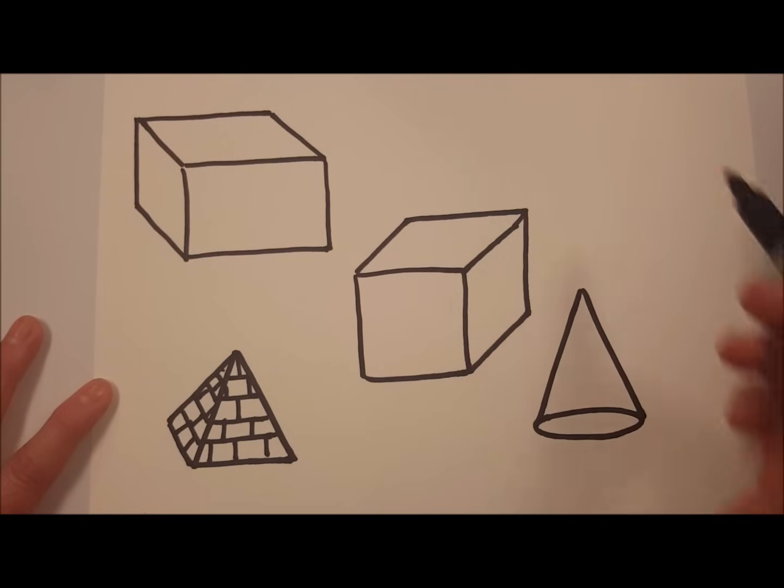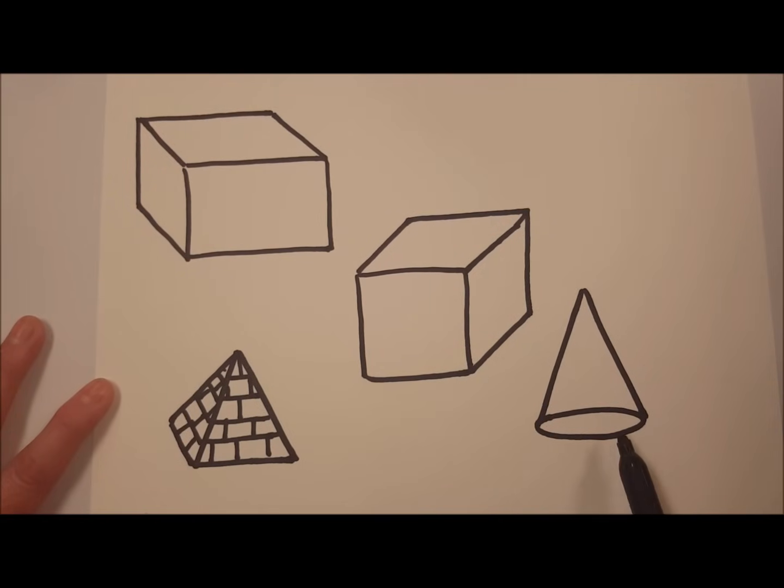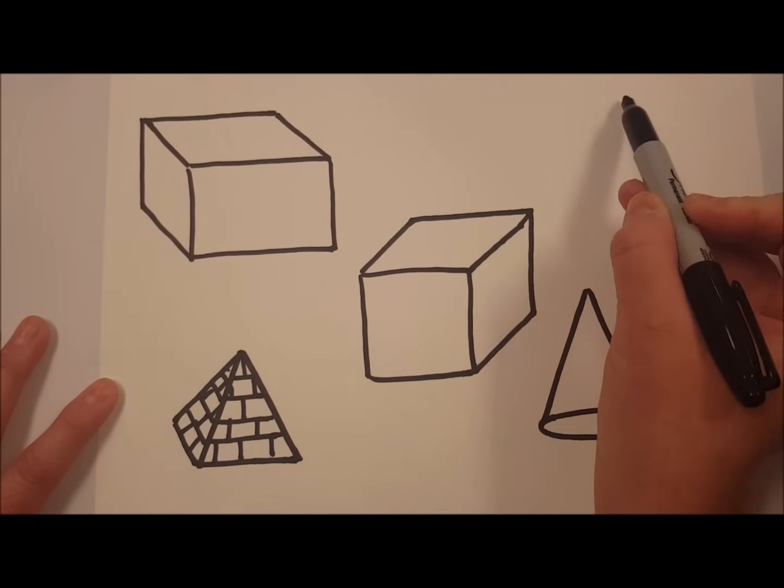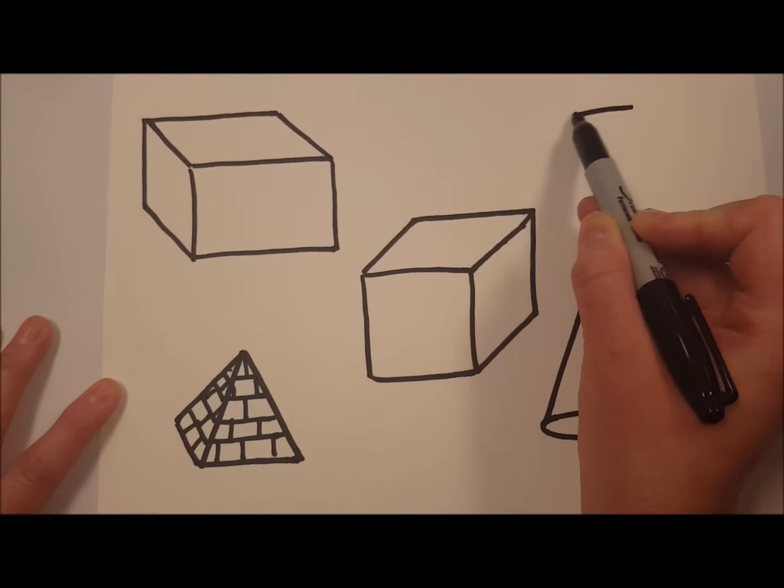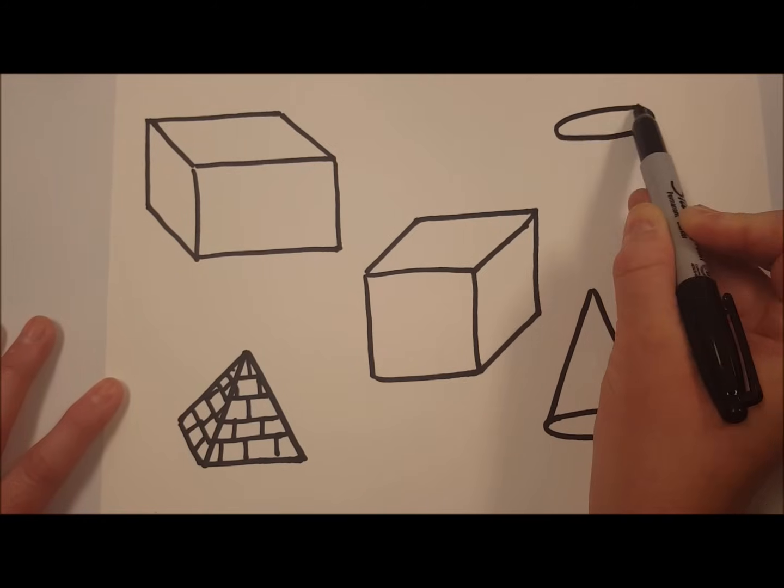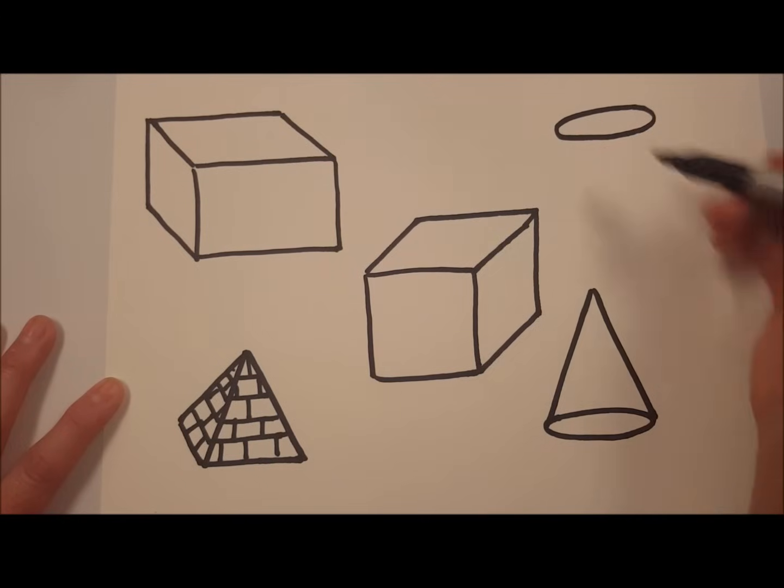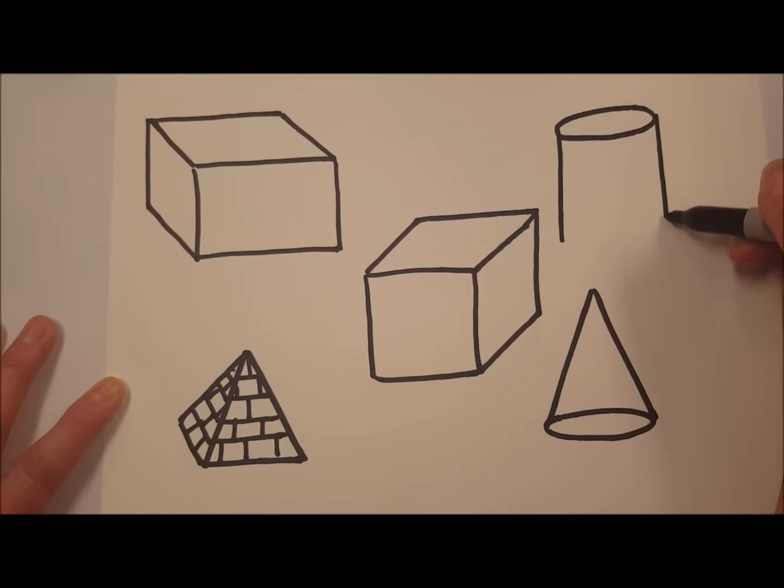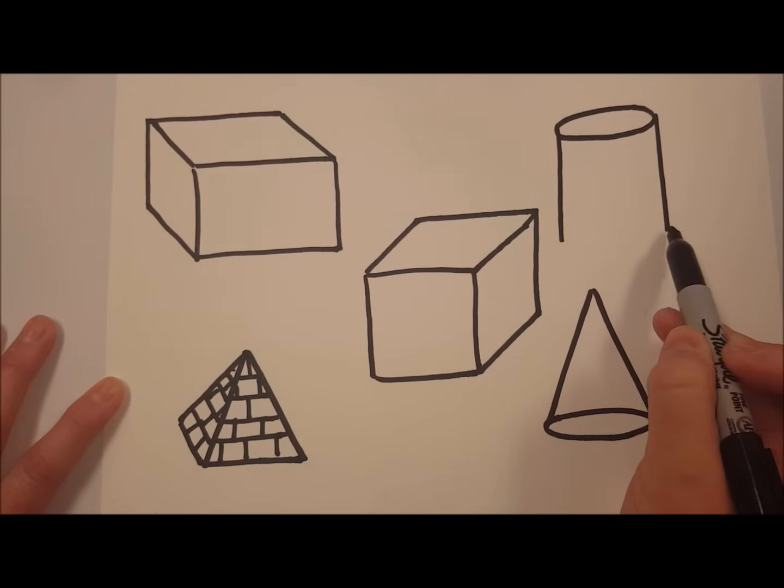The next one we're going to do is a cylinder. Now a cylinder is similar to a cone in that it has an oval on the top and the bottom because it's rounded. So we'll start off with an oval for the top, two lines straight down, and an oval at the bottom.